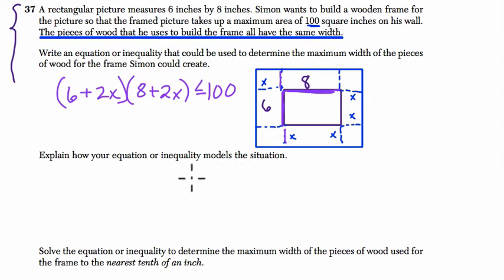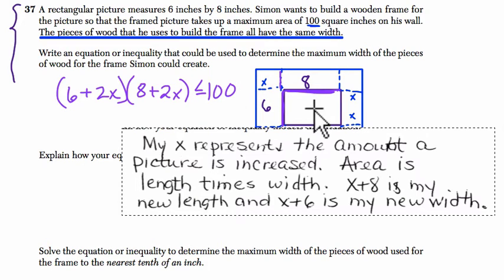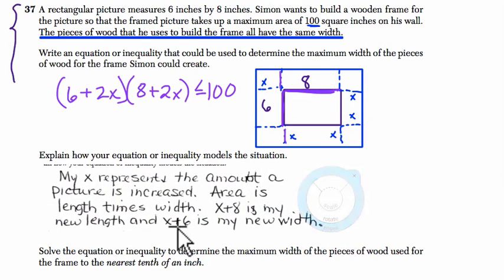Then we want to explain how our equation or inequality models the situation. I never really know what to say here for the explanation. So I'll paste a student explanation from the samples that got full credit. My x represents the amount of pictures increased. Area is length times width. x plus 8 is my new length, and x plus 6 is my new width. Oops, there's a mistake here. The new width is actually 2x plus 8 and 2x plus 6. As long as you explain what the components of these equations are, you could say I put it less than or equal to 100 because the maximum area is 100.